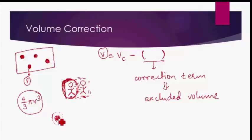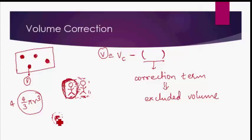The total volume which a molecule doesn't allow other molecules to occupy is 4 times its own volume. So the excluded volume per molecule is 4 × (4/3)πr³, where r is the radius of the molecule. Any other molecule trying to come near this molecule can only approach as far as the dotted line — the center of mass of the approaching molecule cannot go further — that is its personal boundary.